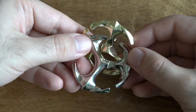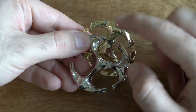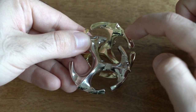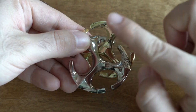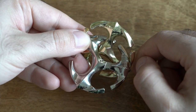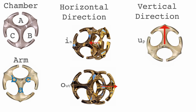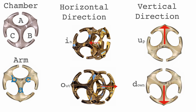Finally we need to encode which way the arm is going through the chamber. If you look at this front side, which is like an arrow, the arm is going up — so that's the up position. The vertical direction is encoded by either u, which stands for up, or d, which stands for down.